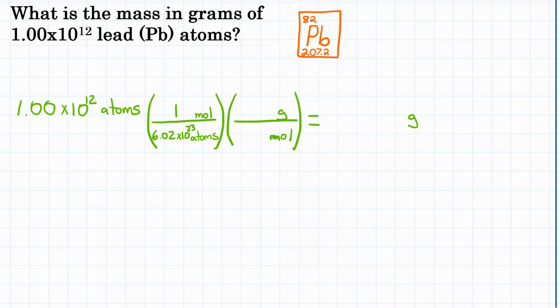And then the second one relates mass and moles, or grams and moles. For lead, because that's what we're talking about, looking at the periodic table, we know that 1 mole is 207.2 grams. We've got that from the periodic table.